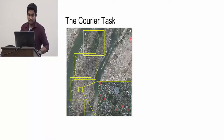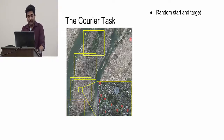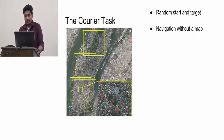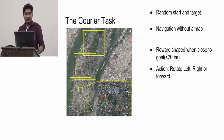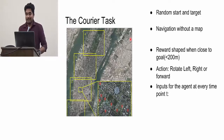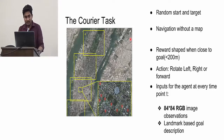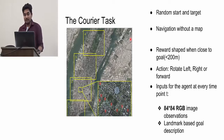The task the agent solves is called the courier task. The agent starts at a random state and a random goal is given to it. It navigates without a map and gets a reward when it is within 200 meters of the goal. At each time step, there are two types of input to the agent: first, an RGB image of 84 by 84; and second — the most important contribution of this paper — the landmark-based goal description.